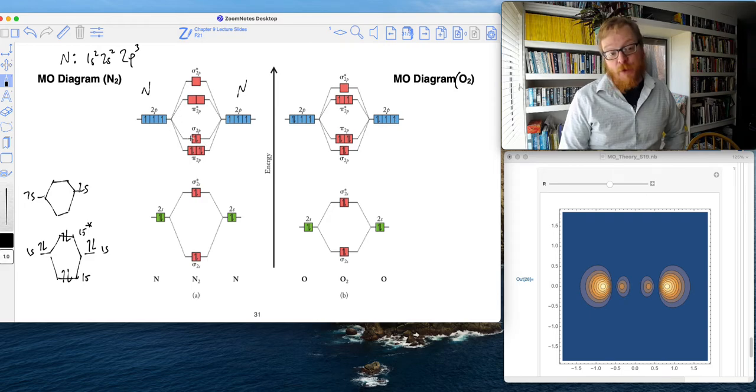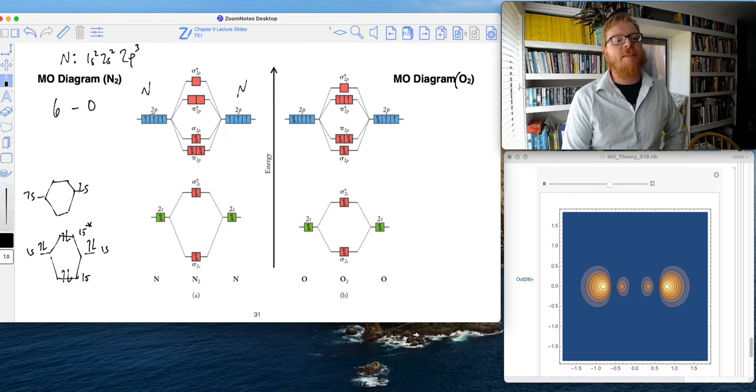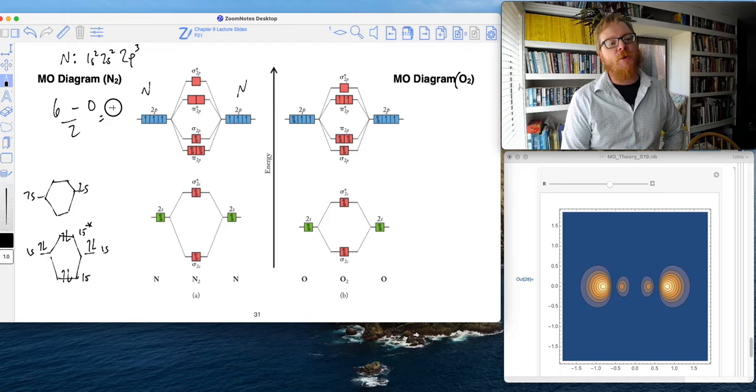But all the same, if we look at what this MO diagram predicts for nitrogen, you can see we've got one, two, three, four, five, six bonding electrons minus zero antibonding electrons divided by two gives me a bond order of three.